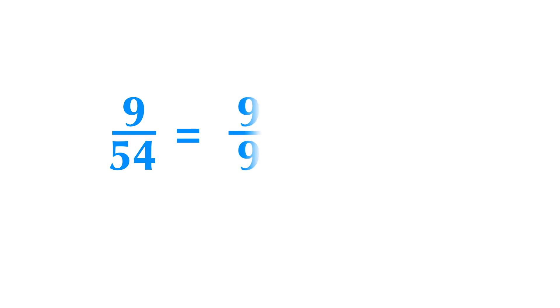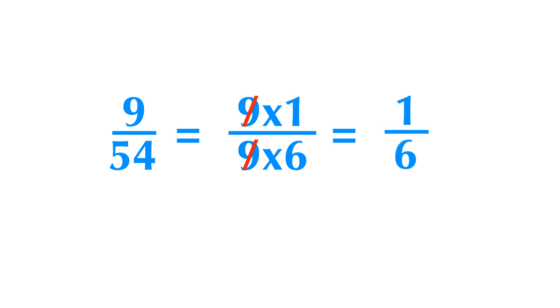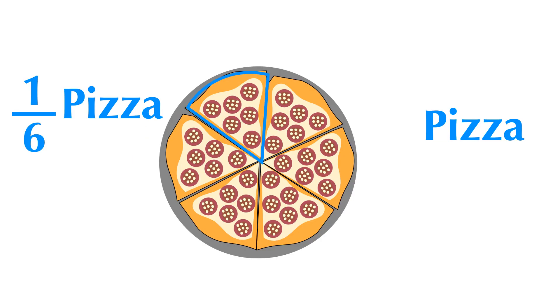It seems like 9 over 54 is a big number to work with. We need to simplify 9 over 54 if 9 and 54 have common factors. 9 equals 9 times 1, and 54 equals 9 times 6. The 9 in the numerator and the denominator can be cancelled out. Therefore, 9 over 54 equals 1 over 6. 1 over 6 is a much easier number to work with than 9 over 54, so we need to simplify fractions as much as possible.